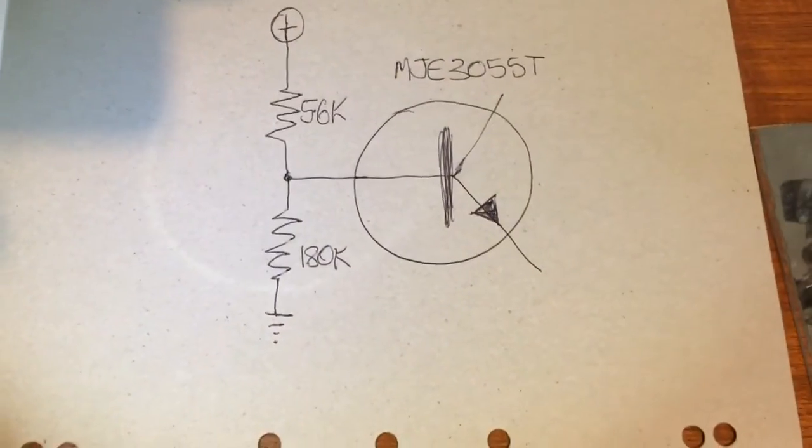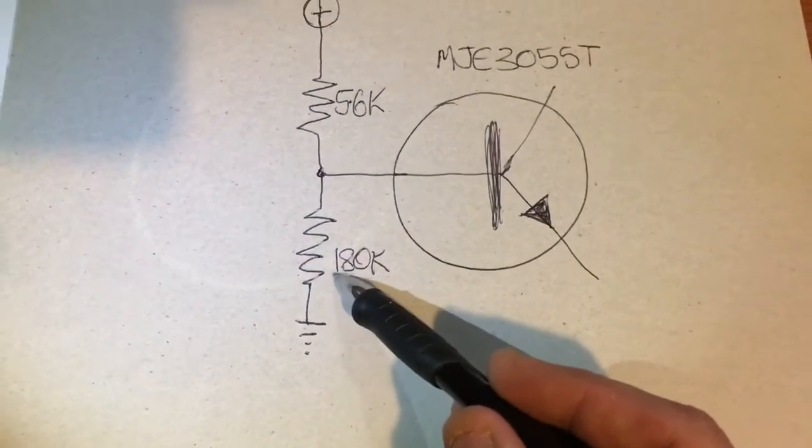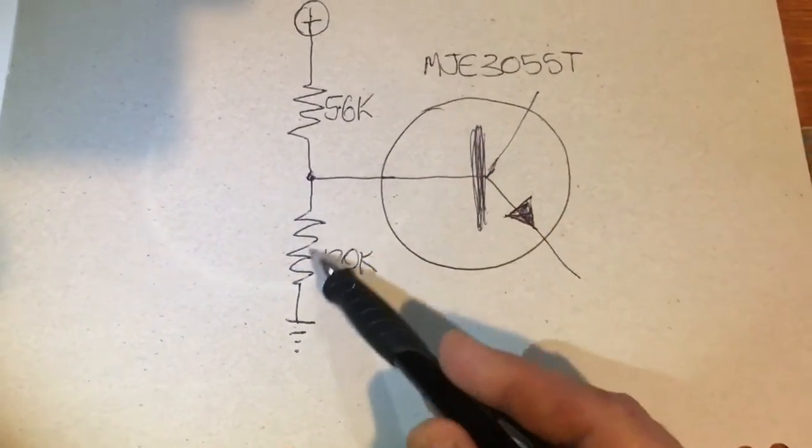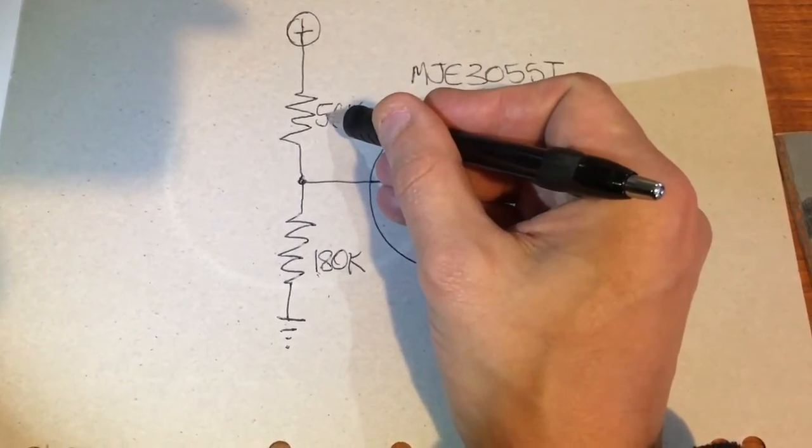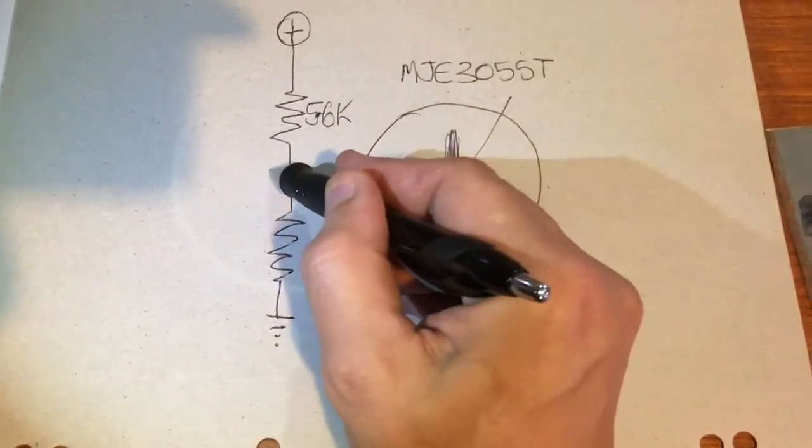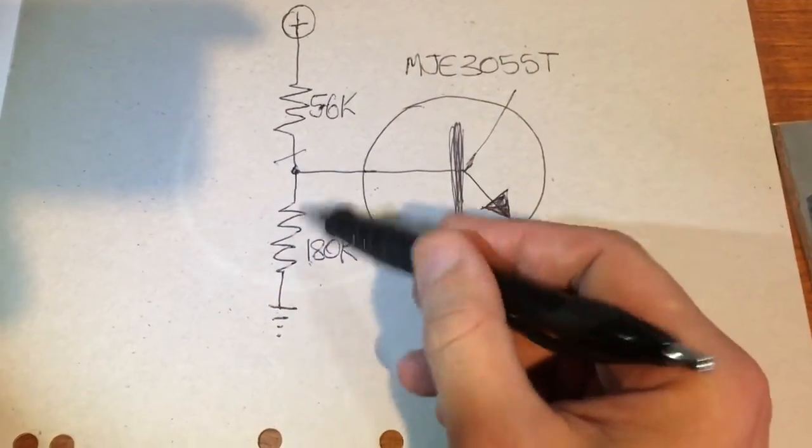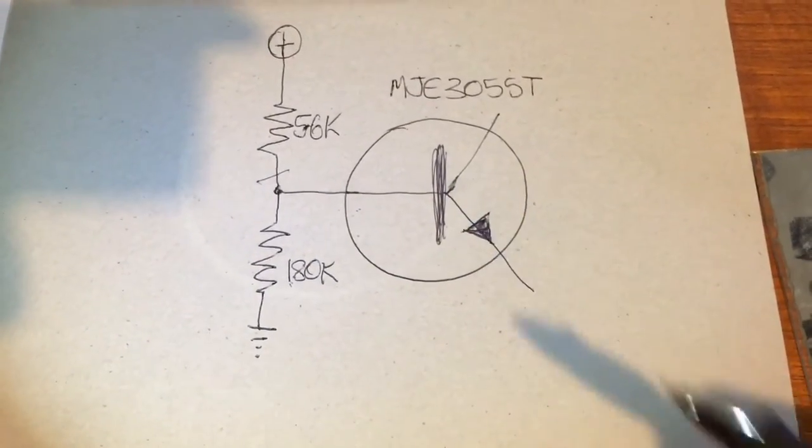Bear in mind this just ends up being a resistor divider. The 180k resistor here would normally pull the base of the transistor low. The 5.6k is normally holding it high. If we disconnect here, then of course the base is going to be held low, and the transistor can never turn on and pop.